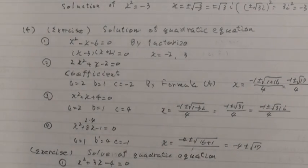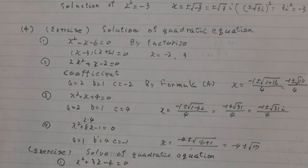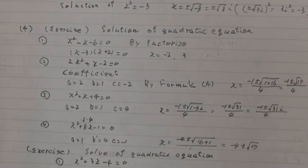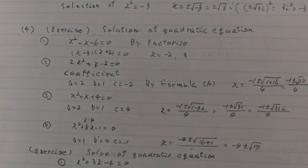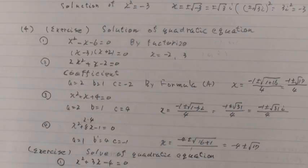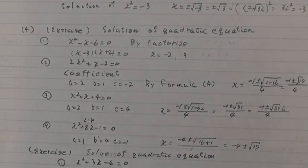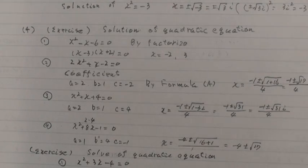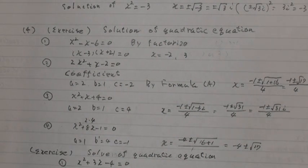And parenthesis 4: practice solutions of quadratic equations. Circle 1: x squared minus x minus 6 equals 0. By factoring: x minus 3 times x plus 2 equals 0. Then x equals minus 2 or x equals 3.